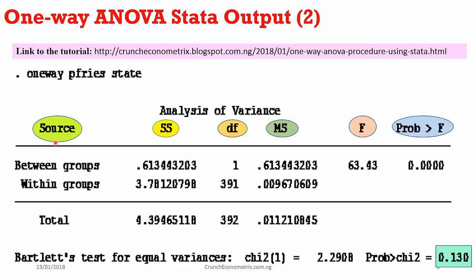Source tells you the source of variation of the dependent variable y. I have two groups here — between groups and within groups — generating the sources of variation in the dependent variable.